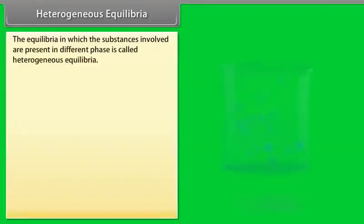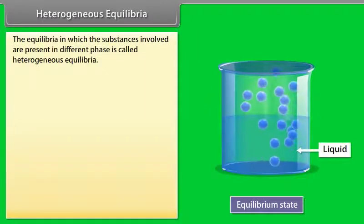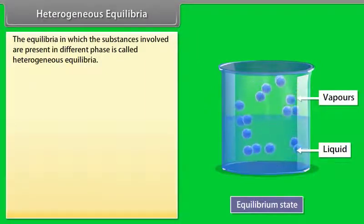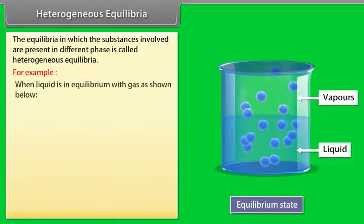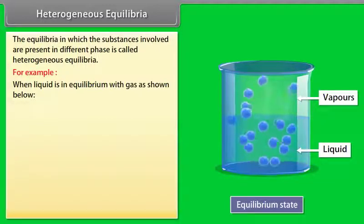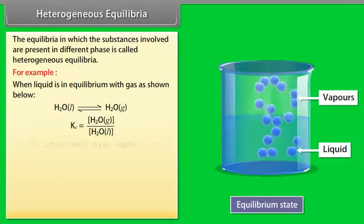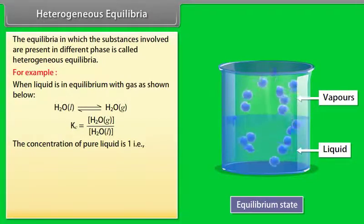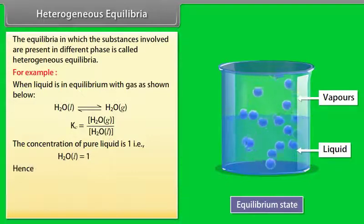Heterogeneous Equilibria: Equilibria in which the substances involved are present in different phases are called heterogeneous equilibria. For example, when liquid is in equilibrium with gas, the concentration of pure liquid is taken as 1 — that is, H₂O in liquid form equals 1 — and the equilibrium constant expression is simplified accordingly.